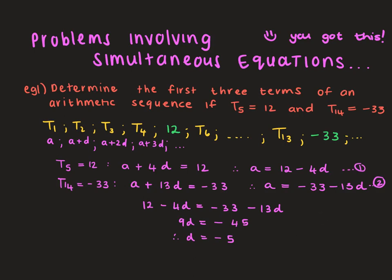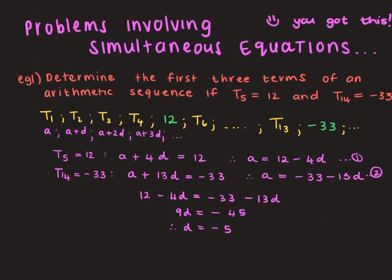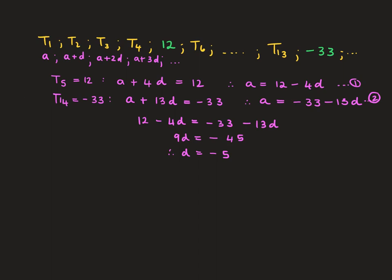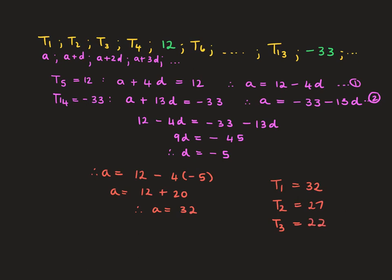Now that we know what D is, it becomes very easy to solve for A. To solve for A, you simply substitute back into either one of your two equations. I'm going to choose the first one: A equals 12 minus 4 times negative 5, which equals 12 plus 20. So term 1 is 32. The constant difference is negative 5. Term 2 will be 32 minus 5, so 27. Term 3 will be 27 minus 5, which is 22.